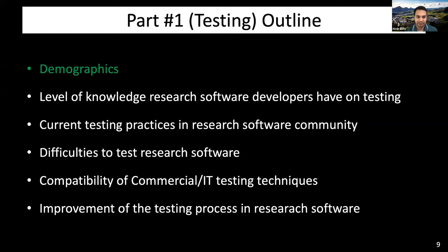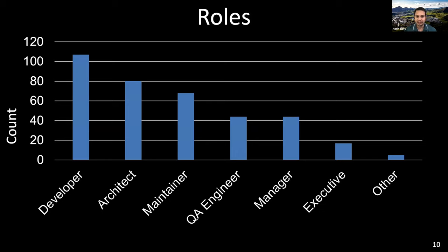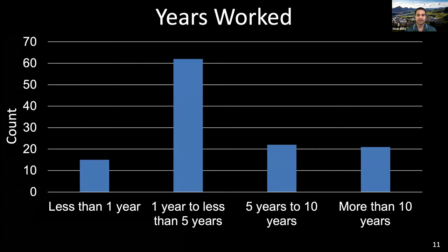Starting with demographics: a developer's project role can affect their perception of testing. The respondents were skewed more toward technical roles — developer and architect — than non-technical roles. Because respondents could choose more than one role, the total in the figure is larger than the total number of responses. Regarding experience, most participants had more than a year working in research software. Just under one third had more than five years of experience and only a small number had less than one year.